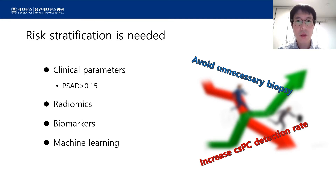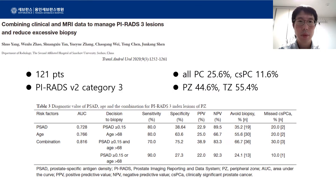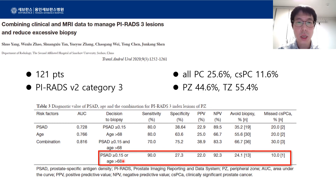Before starting, I would like to note that a PSA density of 0.15 has been reported to be a reasonable cutoff value from many studies, and it will not be reviewed in this talk. First, clinical parameters can be used. This study from China on 121 patients reported that if only patients with an age older than 68 and/or a PSA density greater than 0.15 are biopsied, 24.1% of biopsies can be avoided while missing only one clinically significant cancer.